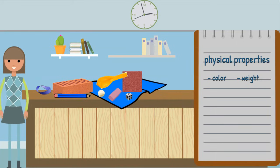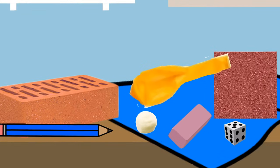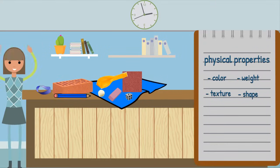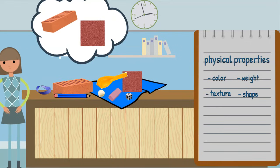Texture is another physical property. Texture describes how something feels. Words like soft, rough, and furry are words that describe texture. Can you name which items are rough? Yes, the sandpaper and brick are both rough.